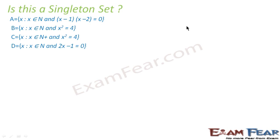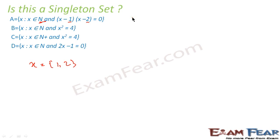Let us take some examples to clear our concept on singleton set. Set A is the set of natural numbers x such that (x−1)(x−2) = 0. When you solve, you get x = 1 or x = 2. Both 1 and 2 satisfy this condition, so A = {1, 2}. Since A has two elements, it is not a singleton set.